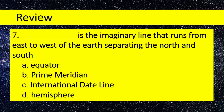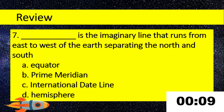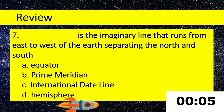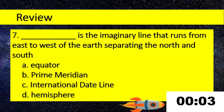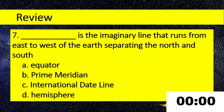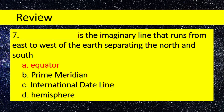Number 7. Blank is the imaginary line that runs from east to west of the Earth separating the North and South. A. Equator, B. Prime Meridian, C. International Date Line, D. Hemisphere. Answer: Equator.